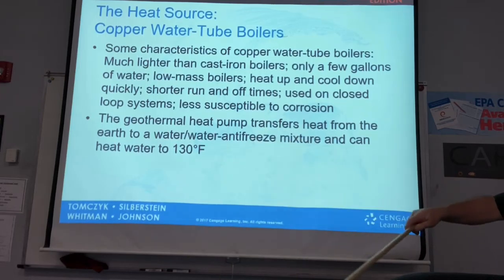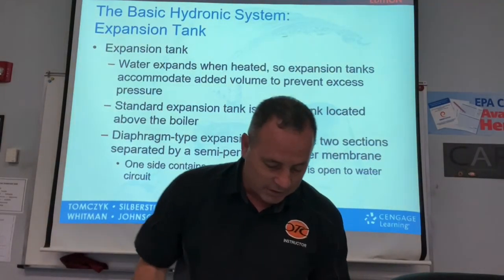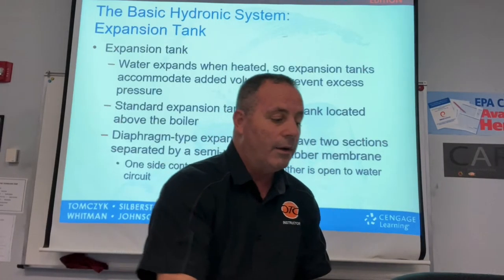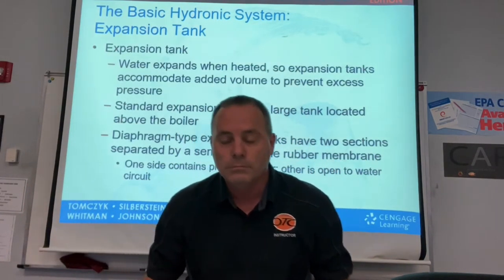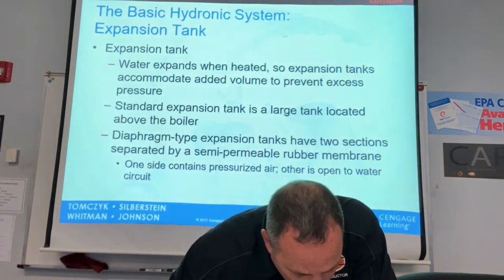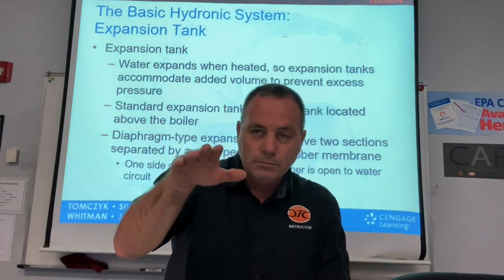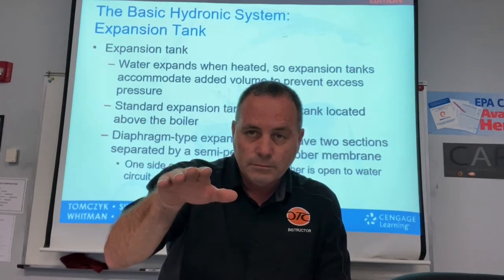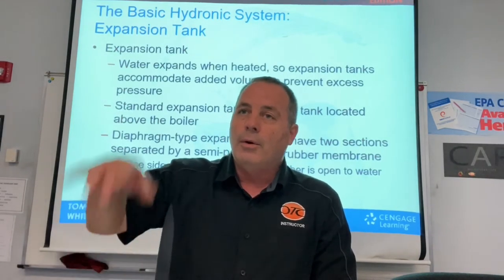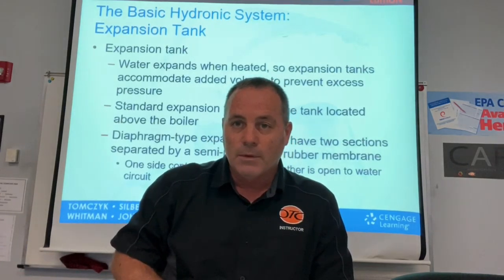Next is the expansion tank. These are now required by code on hot water heaters and boilers. Hot water systems are closed-loop systems — the water comes from the boiler, goes through the piping, and comes right back to be reused.